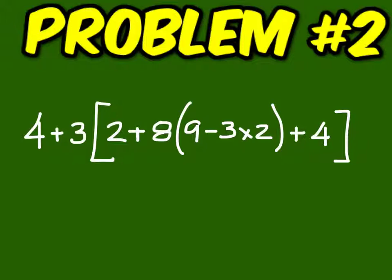For this one, you should have 9 minus 6 is 3 times 8 is 24 plus 2 is 26 plus 4 is 30, 30 times 3 is 90 plus 4 is 94.